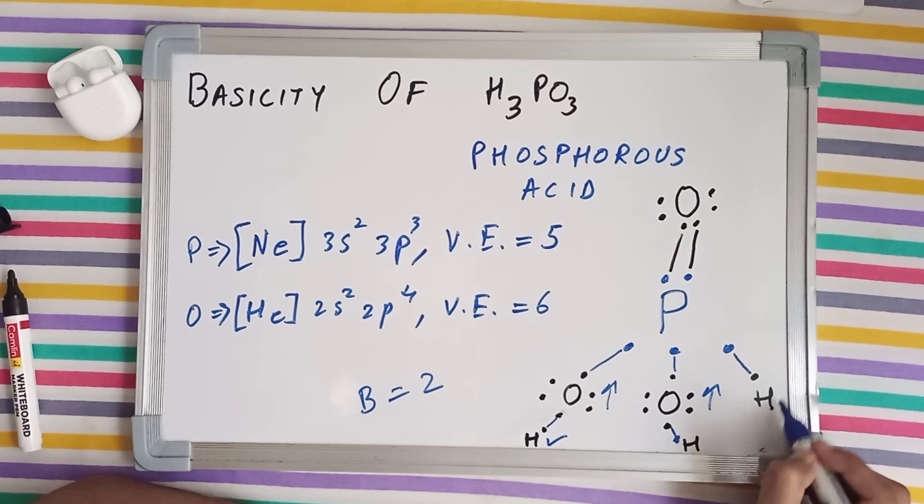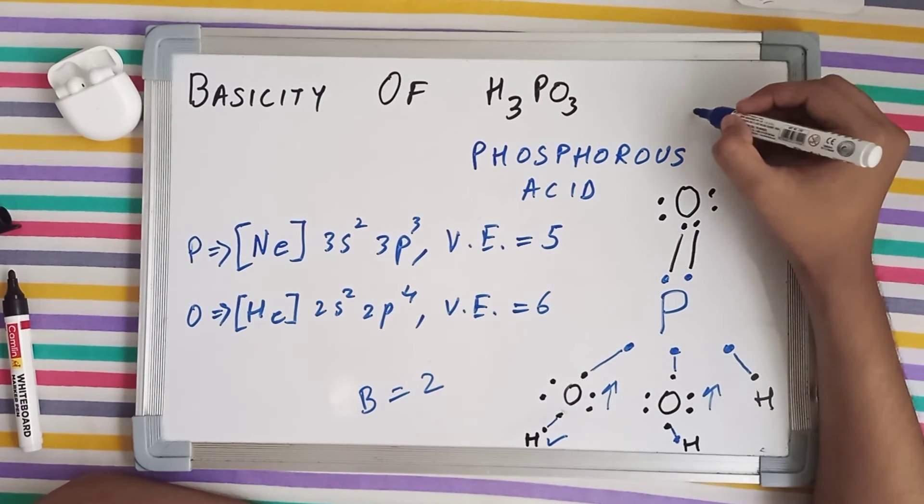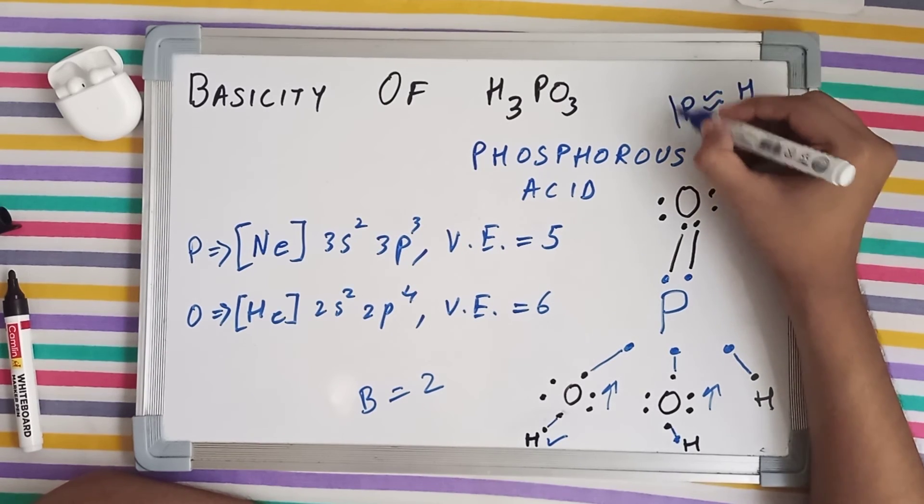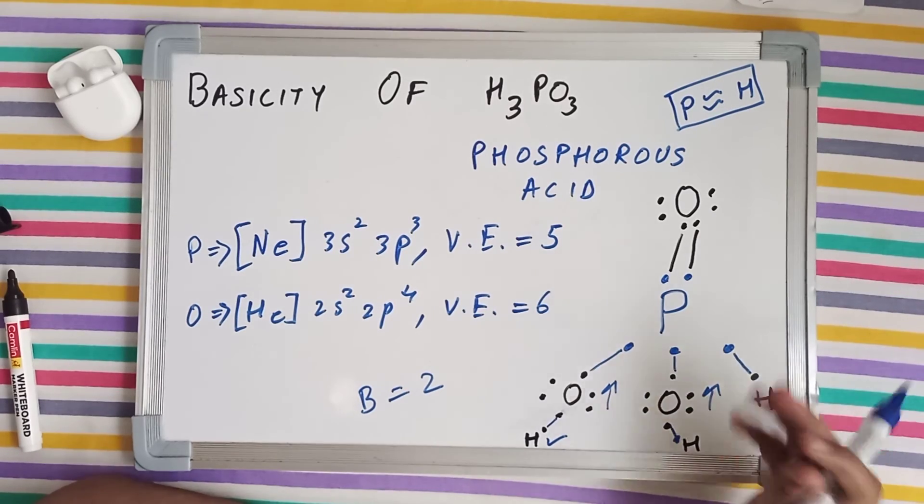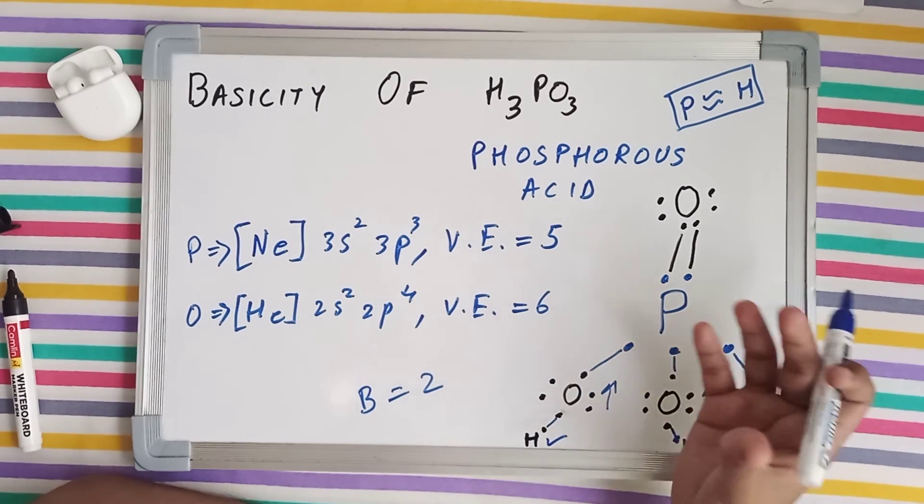But since this third hydrogen is connected directly to phosphorus, and the electronegativity values of phosphorus and hydrogen are somewhat equal, this hydrogen won't be released while we place this H3PO3 in water.